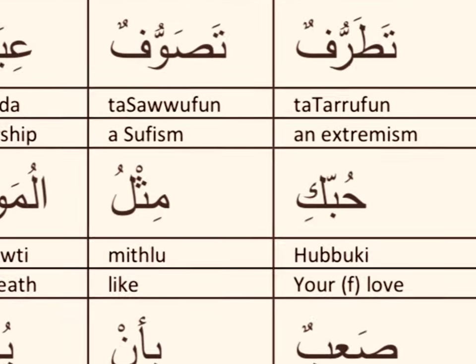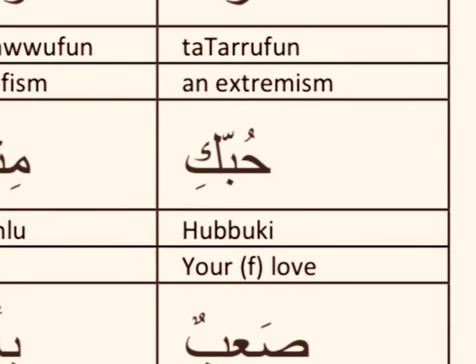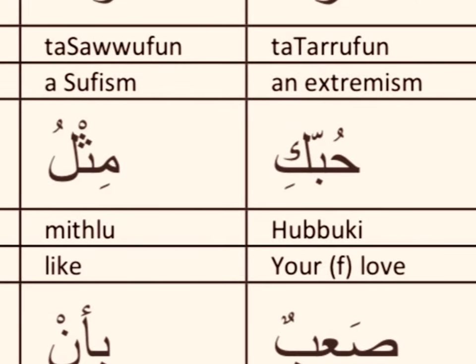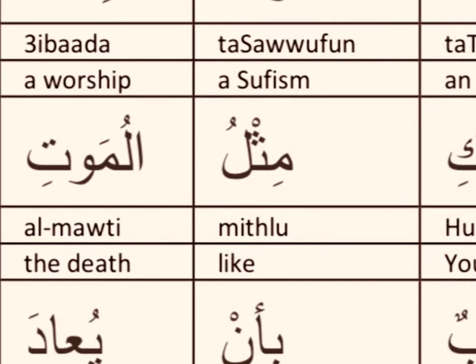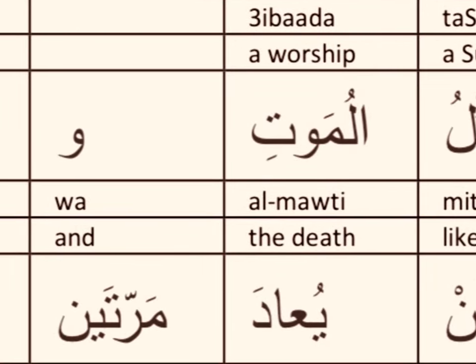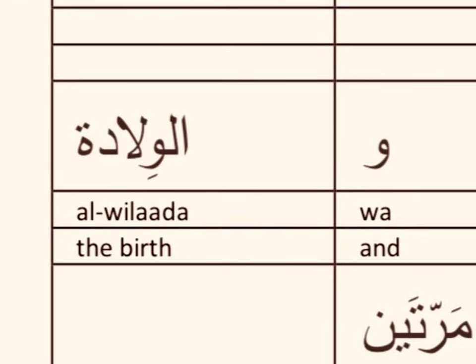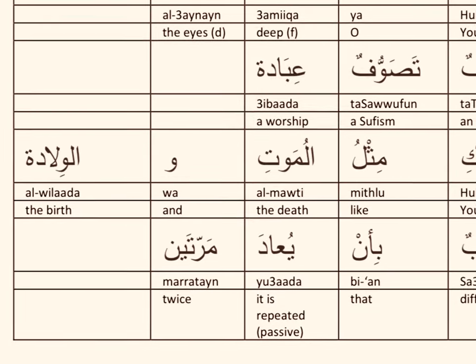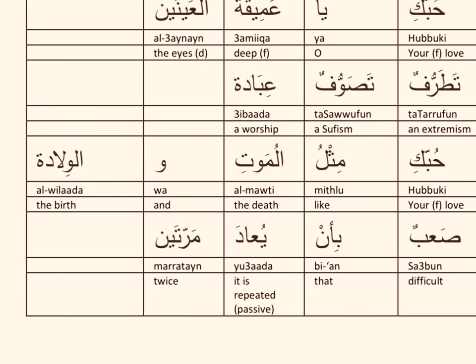Then we have the third line, and again we have 'hubbuki' — your love, or loving you. 'Mithl' means like. 'Al-mawt' — 'mawt' means death, and it carries the kasra vowel at the end because it is in the genitive case, governed by the preposition 'mithl'. And 'al-wiladah' means birth. So loving you is like death and birth.